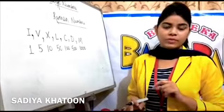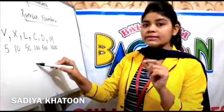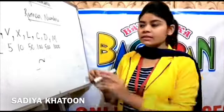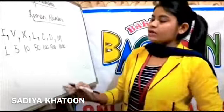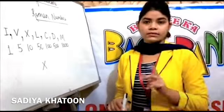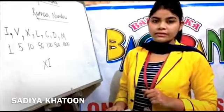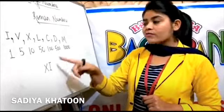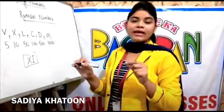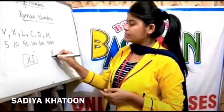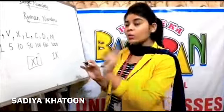The first rule: whenever you write an alphabet and place the next alphabet on the right side, the value of that alphabet gets added. For example, X is 10; if I write I on the right side, I = 1, so 1 is added to 10, making it XI = 11. The second rule: if you place an alphabet on the left side, for example I placed to the left of X means 1 is subtracted from 10, so IX = 9.